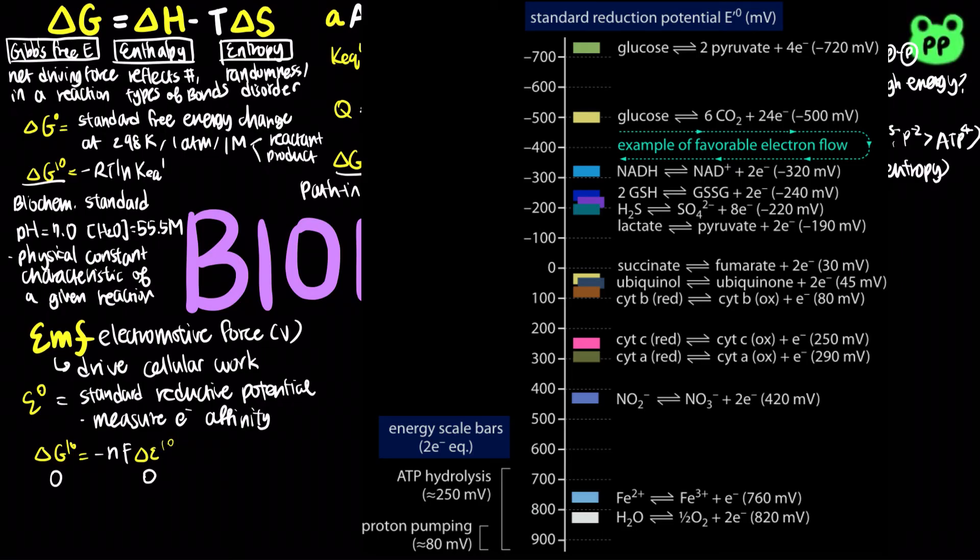When the change in reductive potential is zero, which means that the reactant and product have the same affinity for electrons, the change in free energy is also equal to zero, and the reaction is at equilibrium.